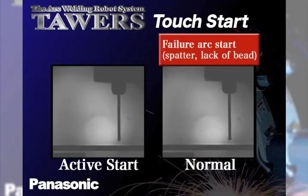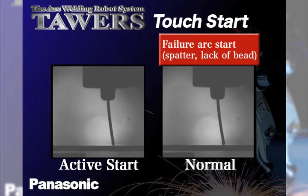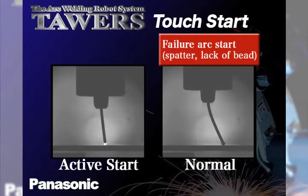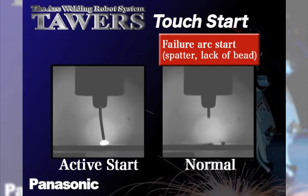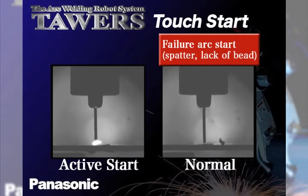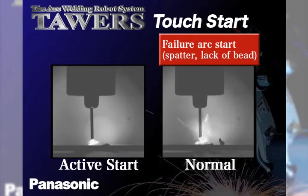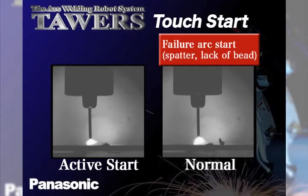On the right, you can see conventional arc starting and the violent results that can occur, with large spatter being exposed and a significant amount of time until the process recovers and becomes stable enough to form a weld pool.